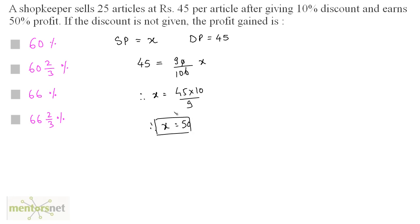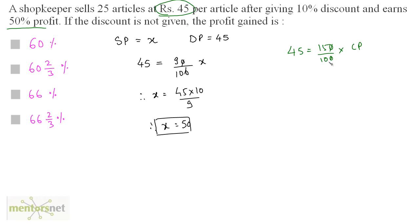So the selling price is Rs. 50. Now, if this 10% discount is given, there is 50% profit. This means that Rs. 45 — the discounted price as selling price — gives 50% profit. So 45 is basically a 50% increase in the cost price, meaning 150 upon 100 times the cost price. The cost price equals 450 by 15, therefore the cost price equals Rs. 30 per article.